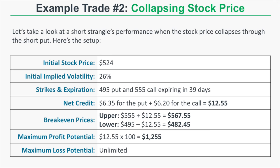In the next example we look at a short strangle where the stock price collapses. The initial stock price is $524, with an initial implied volatility of 26%. We're selling the 495 put and 555 call expiring in 39 days, collecting a net credit of $12.55. Our break-even prices are $482.45 on the downside and $567.55 on the upside, and the maximum profit potential is $1,255. Maximum loss potential remains unlimited.